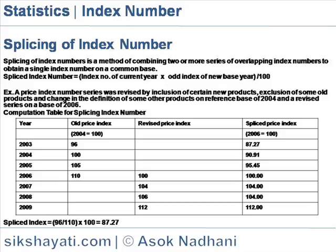Splicing can be done only when index numbers are constructed with the same items for an overlapping year. Splicing, like base shifting, will give an accurate result of the index number. It uses the simple geometric mean and satisfies the circular test.